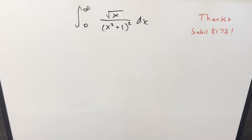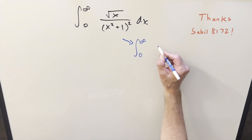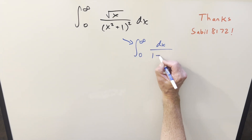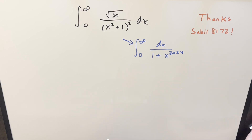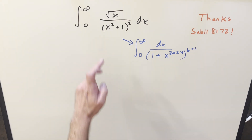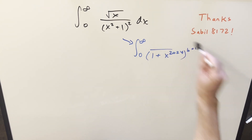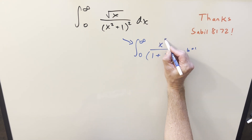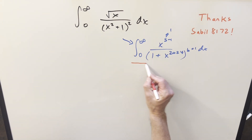I've done one really similar to this recently, so I knew exactly how to go about it. To compare, a little while back we had the integral from zero to infinity of dx over (1 + x^2024). These problems may seem pretty different, but we can manipulate the form: writing the numerator as x^(s-1), in this case s equals 1. There's one general formula that covers integrals of this form.